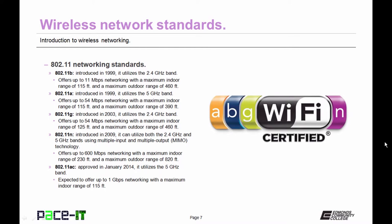600 megabits per second was not enough, so along comes 802.11ac. This was approved in January 2014 and it only utilizes the 5 GHz band. It is expected to offer up to 1 gigabit per second networking with a maximum indoor range of 115 feet, and the maximum outdoor range has not been set yet. There are some other standards coming along that just haven't been approved yet.